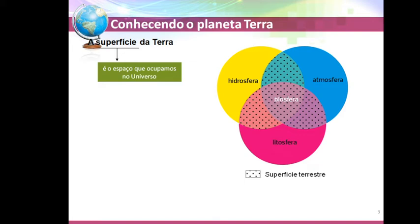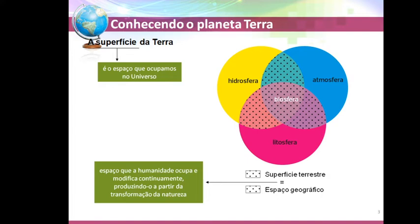Antes de descrever cada item — o que é a litosfera, a hidrosfera, a atmosfera e a biosfera — vamos entender a superfície da Terra. É na superfície terrestre que habita todas as vidas do planeta, ou seja, na litosfera. A superfície é o espaço que ocupamos no universo — o espaço em que o ser humano e outros animais e vegetais ocupam na Terra. Superfície terrestre mais espaço geográfico é igual ao espaço que a humanidade ocupa e modifica continuamente, produzindo a partir das transformações da natureza. Muito importante anotar isso.